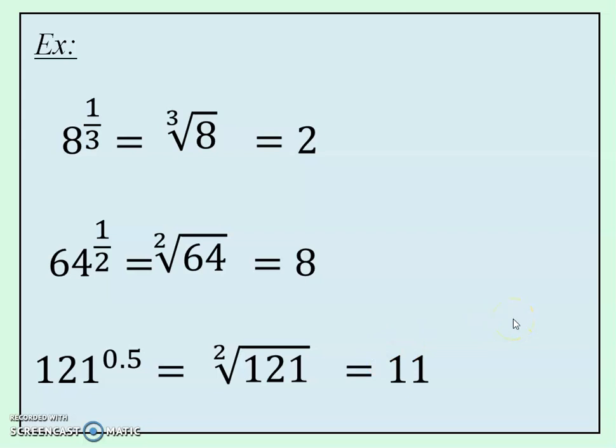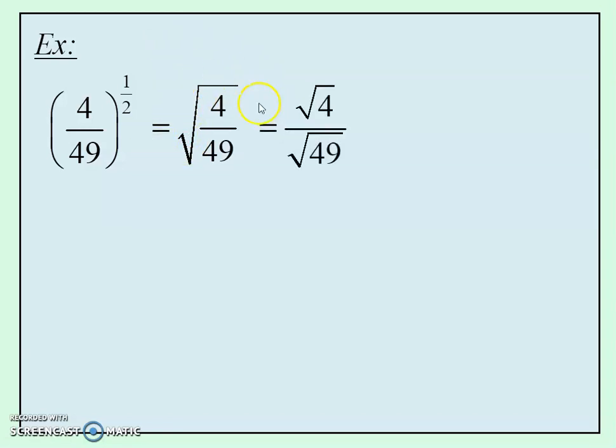I'll show you two more examples. One to show you what to do if you had a fraction. The rule when you have a fraction to an exponent is that that exponent applies to both the numerator and the denominator. That's the square root of the whole thing, and when I take the square root of a fraction, it's equal to the square root of the numerator and the square root of the denominator. That's 2 over 7.